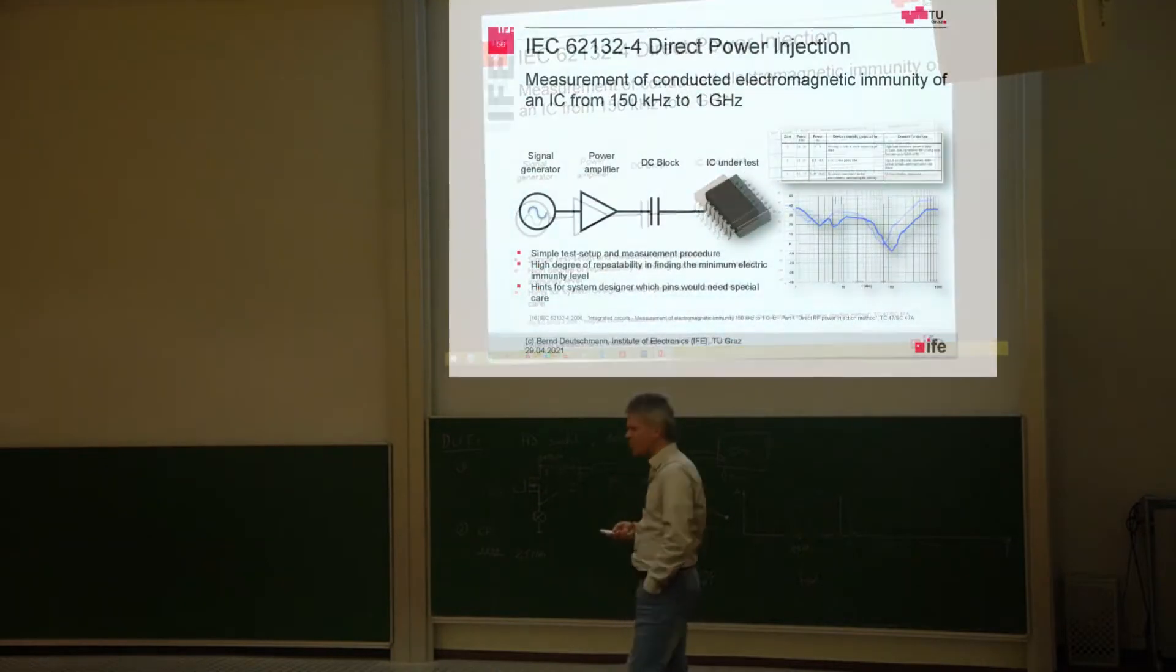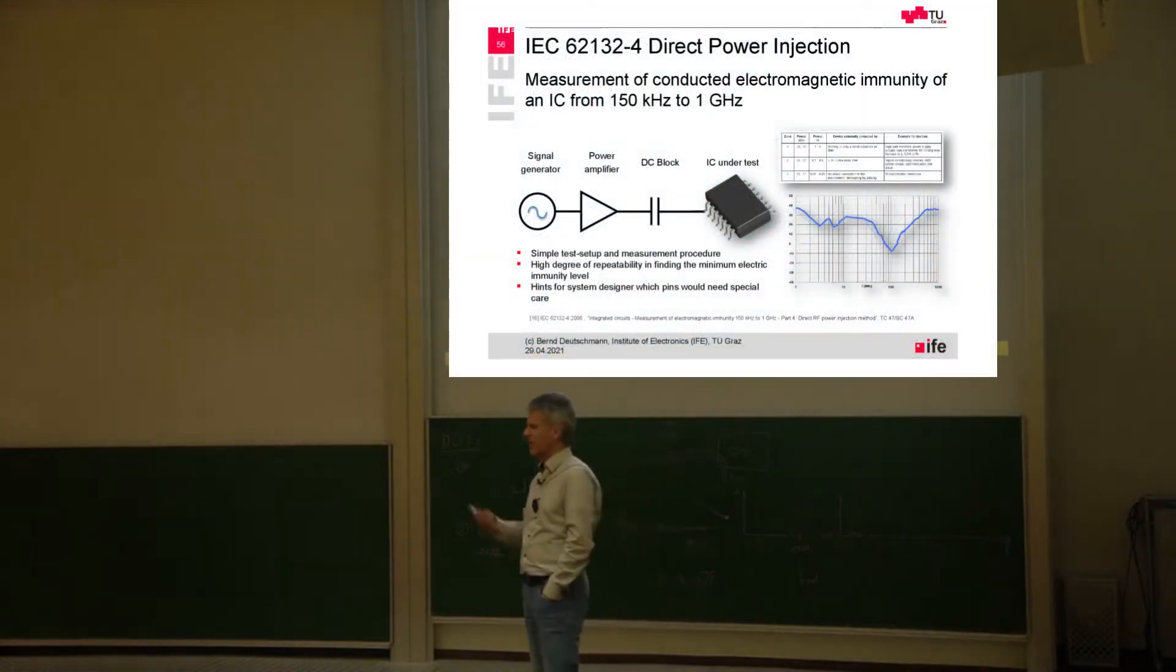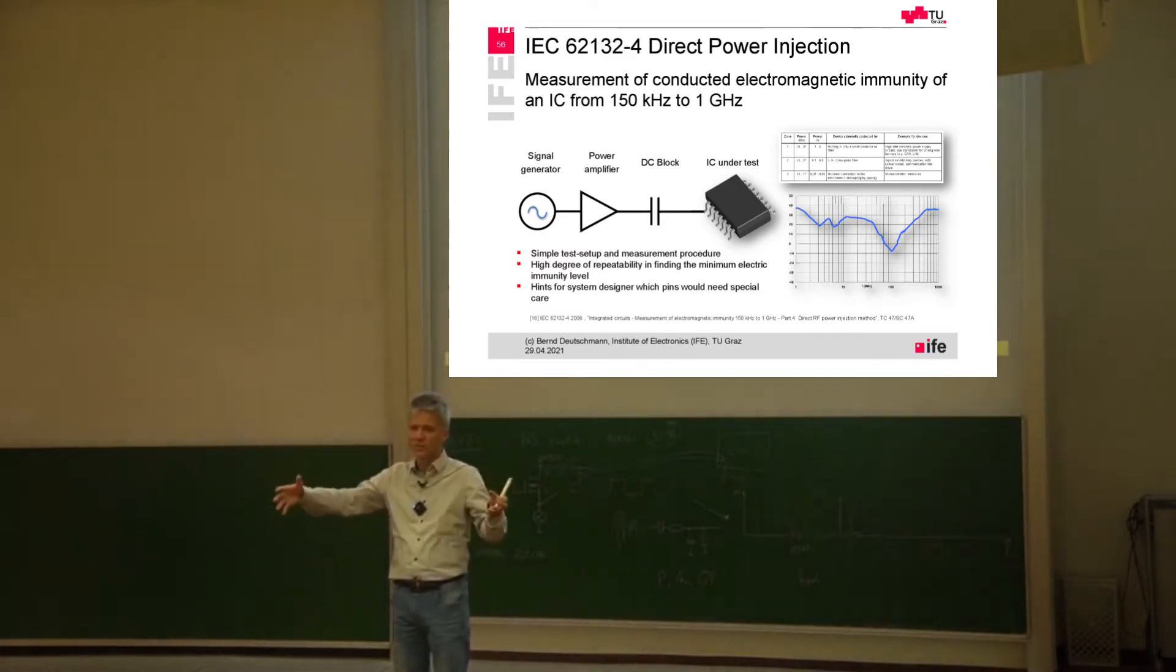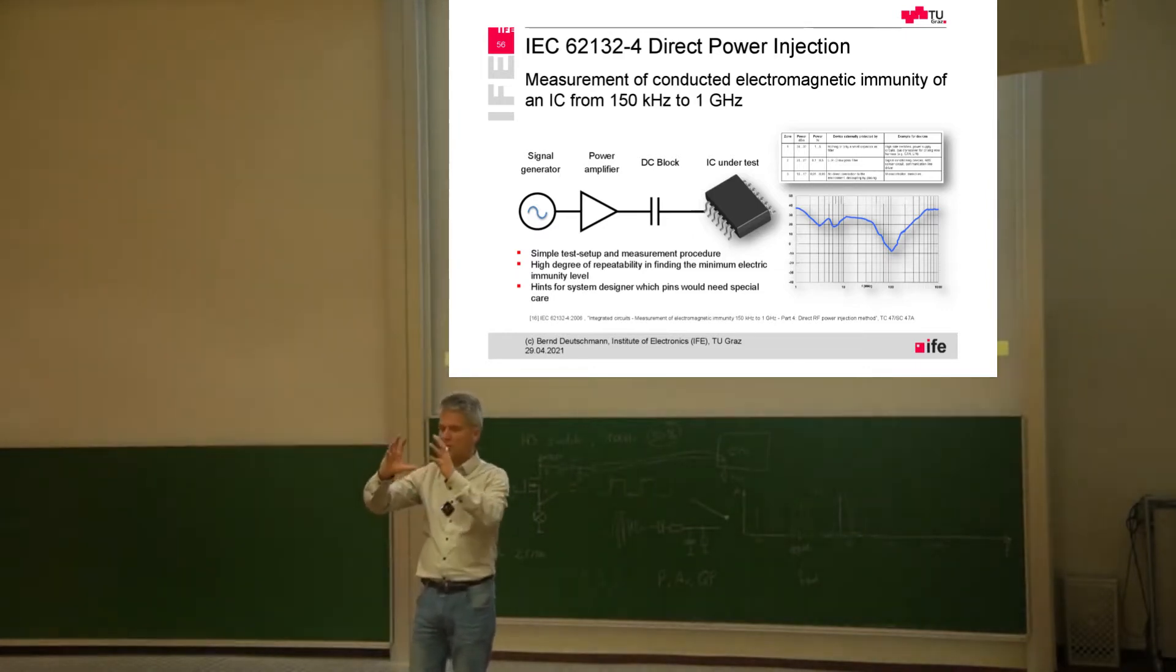The bulk current injection measurement technique on the IC level is not very often used, but it's a very common measurement technique for the system level. At the system level usually we have the whole cable harness from a car, for example, and we are clamping this current clamp, which is a clamp which is about this size. You can open the clamp, place the cable harness in the center of the clamp, and close the clamp, and then it acts as a transformer, transforming noise currents into all the wires of the cable harness.